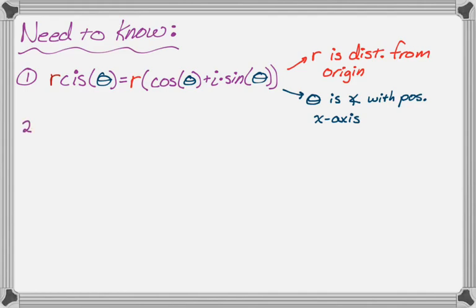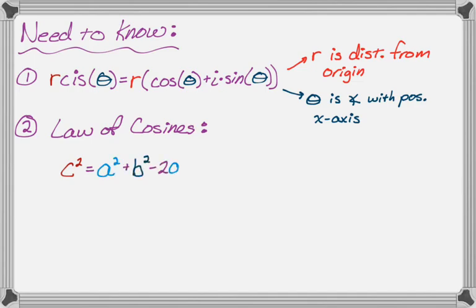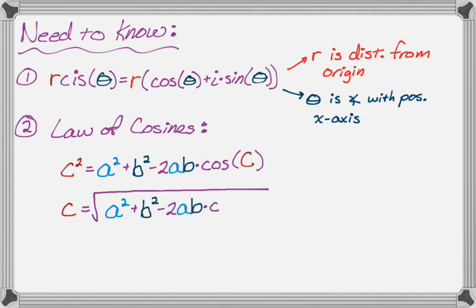And then we also need to know the law of cosines, which maybe is a little surprising, but you'll see as we develop a figure that we can work with that the law of cosines is very relevant to this problem. So that's going to be c² equals a² plus b² minus 2ab cosine C, which is the angle opposite side c. And in particular, we're going to end up solving for c in this case. So you might just remember c is the square root of a² plus b² minus 2ab cosine C. Hopefully you've used the law of cosines a lot, and so it's something that's in your memory.